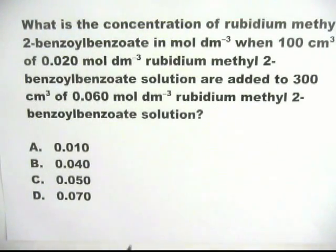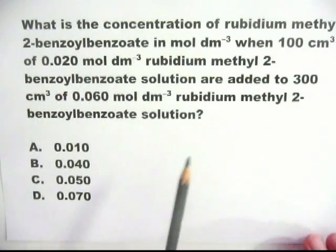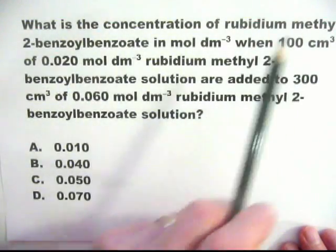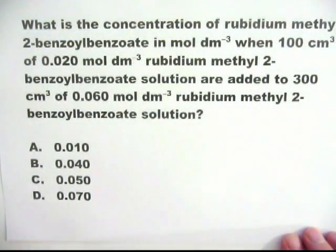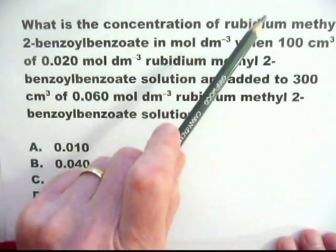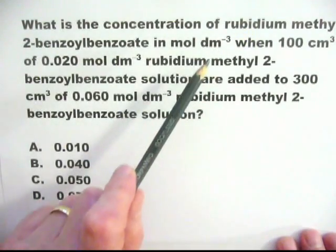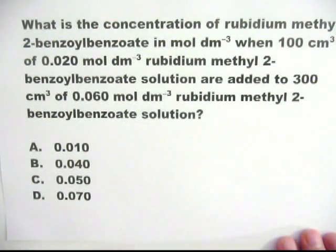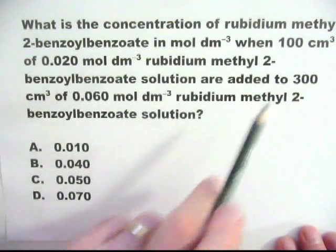When you look at this question, your head will probably start spinning as it sees this chemical, rubidium methyl 2-benzoylbenzoate. Forget that chemical. It really doesn't matter. At this level, these questions are asking you about moles and concentration. They're not expecting you to know anything about rubidium methyl 2-benzoylbenzoate or any of its chemistry. Assume that it's the same as sodium chloride. And then the rest is easy. You just look at the figures.